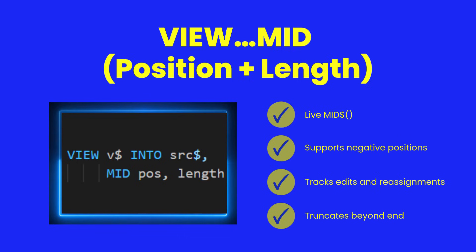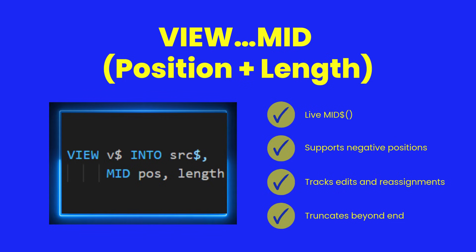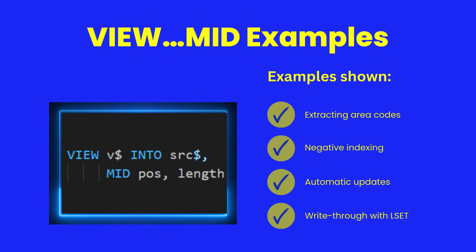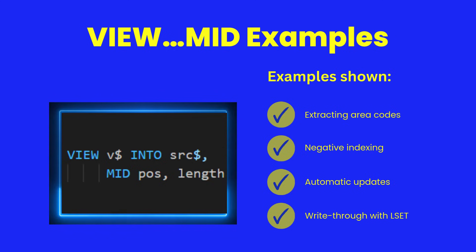View.mid is the dynamic counterpart of mid function. You supply a position and length, and the view slices into the source string using those coordinates. Because the view binds directly to the underlying buffer, it automatically tracks source reassignments, length changes, and edits. Negative positions count backward from the end, just like advanced slicing features in other languages. Here you can see view.mid in action: extract a prefix, extract a suffix, then reassign the source string. The view updates automatically because it caches the SID of the source. And when you assign through the view with lset, you modify the exact characters inside the source without affecting the rest of the string.